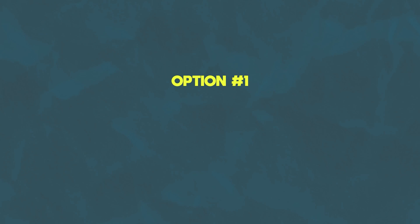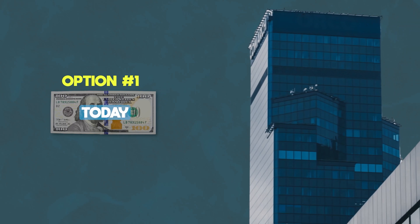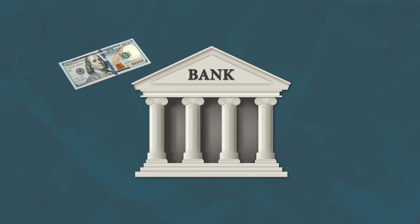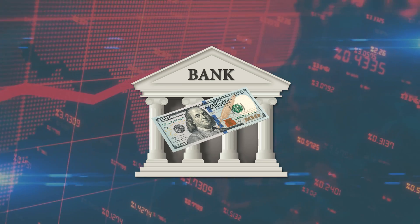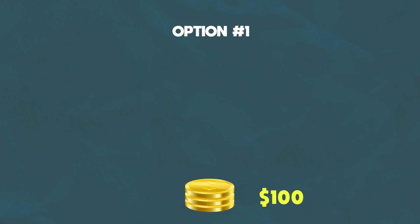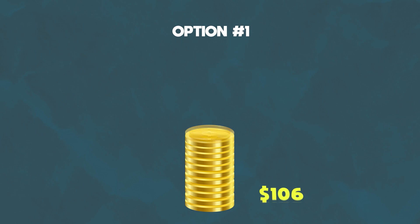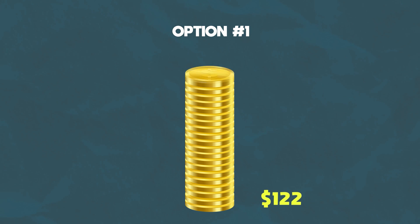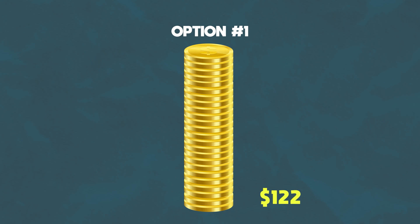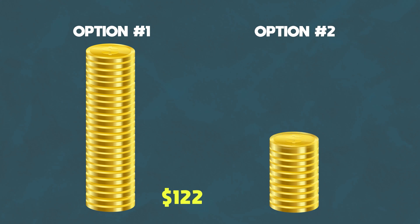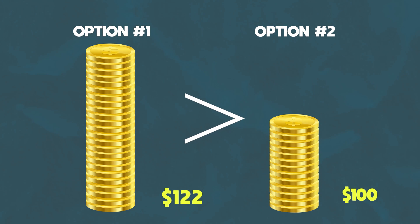If you go with option number one and took a hundred dollars today, you can go and invest that hundred dollars and earn a return on it. Let's assume you put it in the bank and earn a very low interest rate of just 2% a year. After year one, your hundred dollars would be worth $102. After year two, $102 would become $104.04. After year three, it grows to $106.12, and so on. At the beginning of year 10, you would have $121.90. If you had gone with option number two, by the beginning of year 10 you would have just gotten your final payment of $10, and you would only have a hundred dollars total.